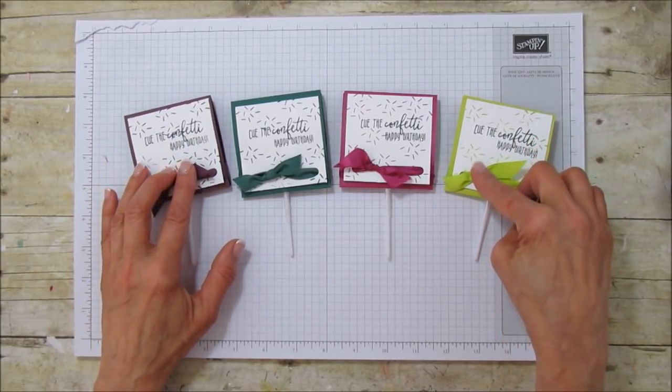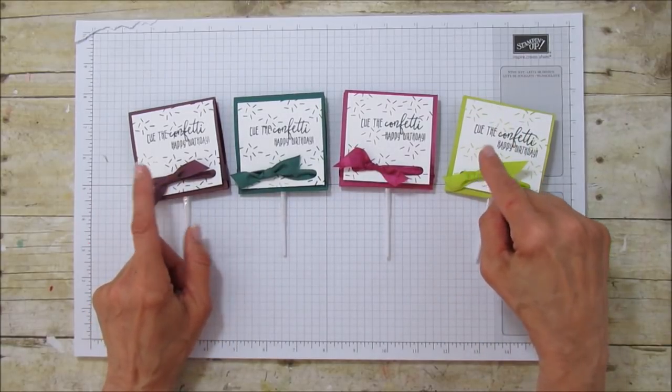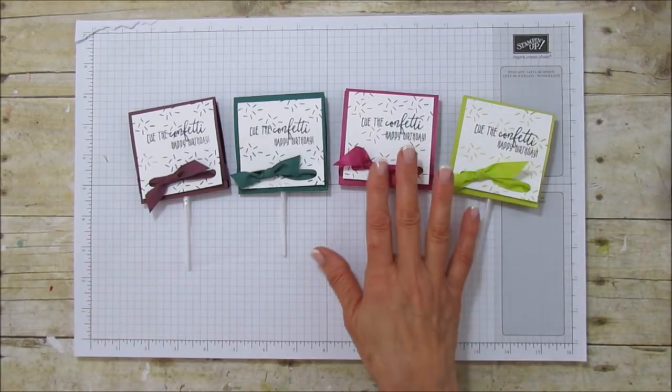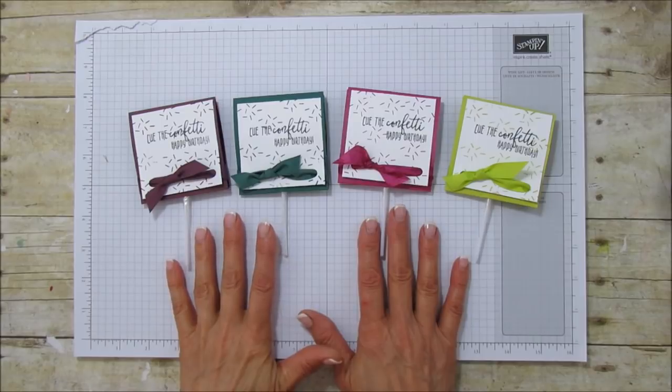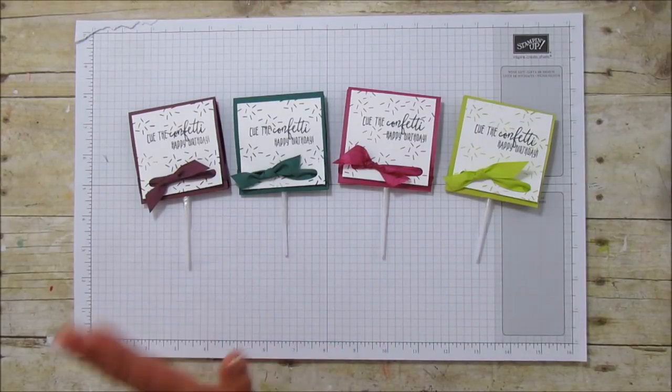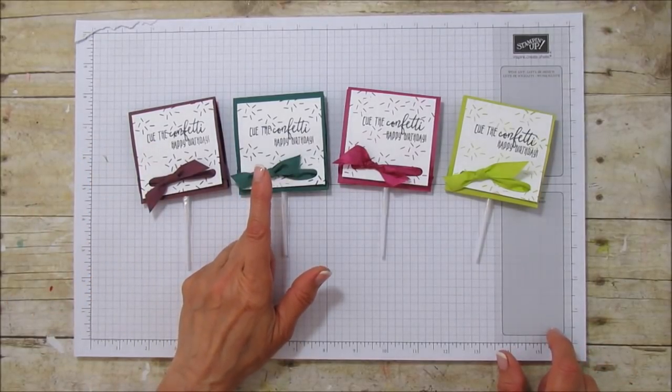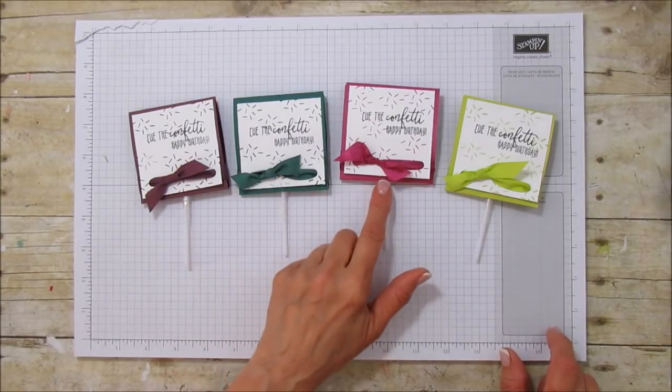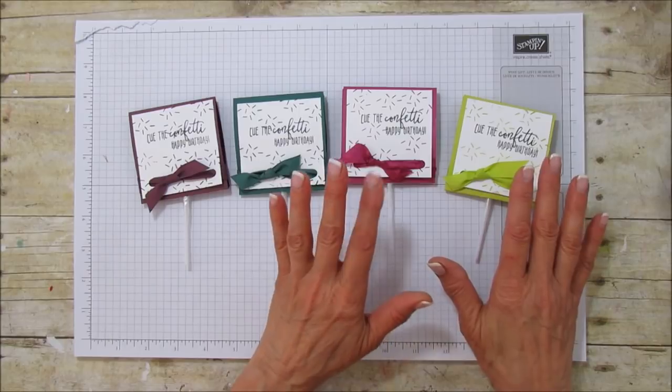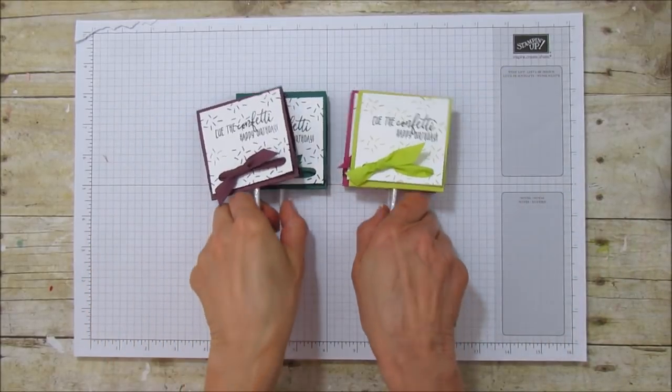So we're going to do a berry burst one this time and they will all coordinate with the exact same ribbon and the same designer series papers. These are all our 2017-2019 in colors: fresh fig, tranquil tide, berry burst and lemon lime twist. I know these two for sure, I use them constantly. I love those two colors so let's get started with this project.